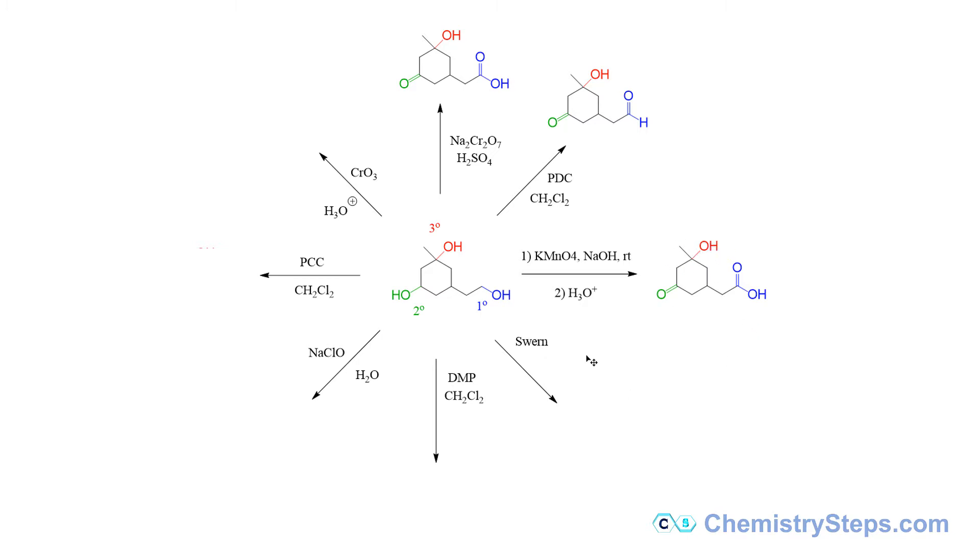Next we have the Swern oxidation, so Swern oxidation is used again to selectively convert the primary alcohol into an aldehyde, and the secondary alcohol is going to be converted into ketone, and tertiary is not reacting, once again remember that.